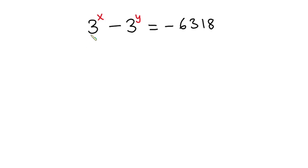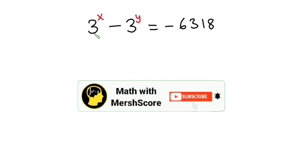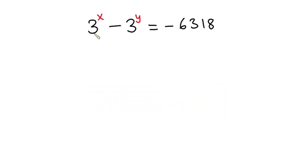Hello everyone! In this video we have a nice exponential equation: 3 to the power x minus 3 to the power y is equal to negative 6318, and we have to find the values of x and y. Before we begin, pause the video and try first. If you are new here, please consider subscribing and don't forget to like this video. Now let's get started.